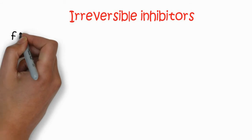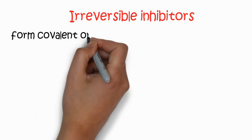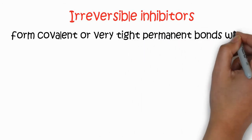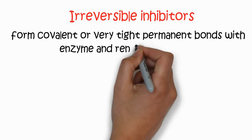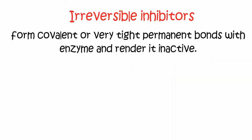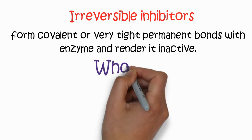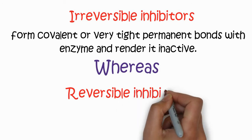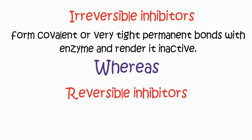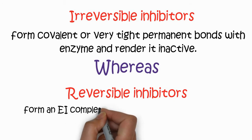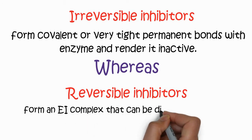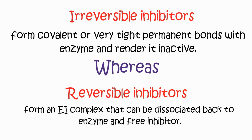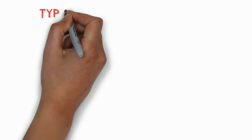The irreversible inhibitor is only one type. It forms covalent or very tight permanent bonds with the enzyme and renders it inactive. Reversible inhibitors form an enzyme-inhibitor complex that can be dissociated back to enzyme and free inhibitor. That is the difference between the two types.